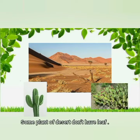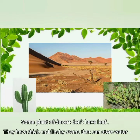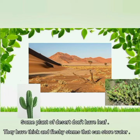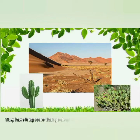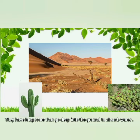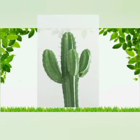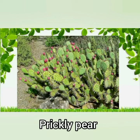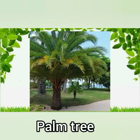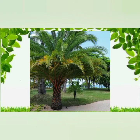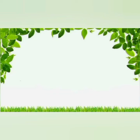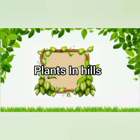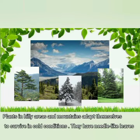Some desert plants don't have leaves; they have thick and fleshy stems that can store water. They have long roots that go deep into the ground to absorb water. Some examples are cactus, pear, and palm trees.